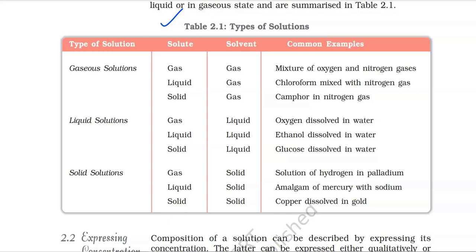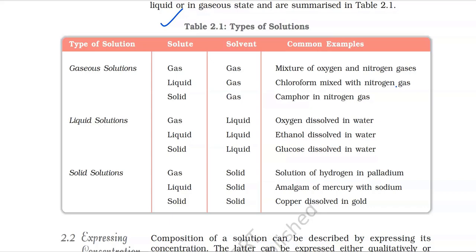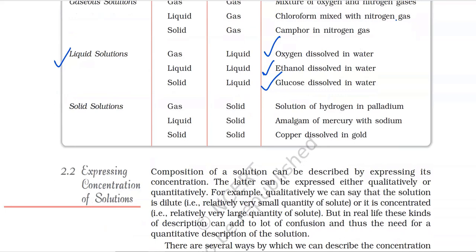The first type is gaseous solution, where the solute can be gas, liquid, or solid, and the solvent is gas. Common examples are mixtures of oxygen and nitrogen gases, chloroform mixed with nitrogen gas, and camphor in nitrogen gas. The next type is liquid solutions, where the solute is again gas, liquid, or solid, and the solvent is liquid. Common examples are oxygen dissolved in water, ethanol dissolved in water, and glucose dissolved in water.